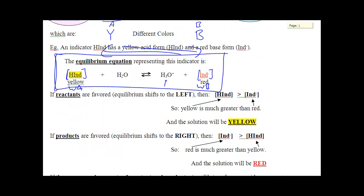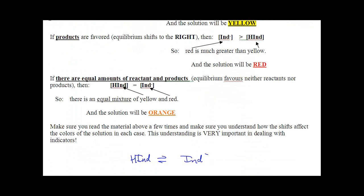One more thing: if you are exactly in the middle — not shifted left and not shifted right — you have equal parts yellow and red, and you will be orange. Welcome to elementary school with primary and secondary colors: yellow and red make orange. So you're yellow if shifted way left, red if shifted way right, and if you're exactly in the middle, you are orange. That special scenario is called the transition point.